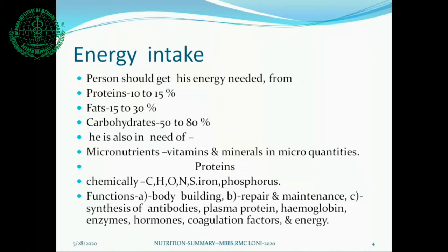A person also needs micronutrients in the form of vitamins and minerals. Now we discuss the proximate principles of diet, starting with proteins. Proteins chemically contain carbon, hydrogen, oxygen, nitrogen, sulphur, and also iron, phosphorus, iodine, or other chemicals depending on the type.